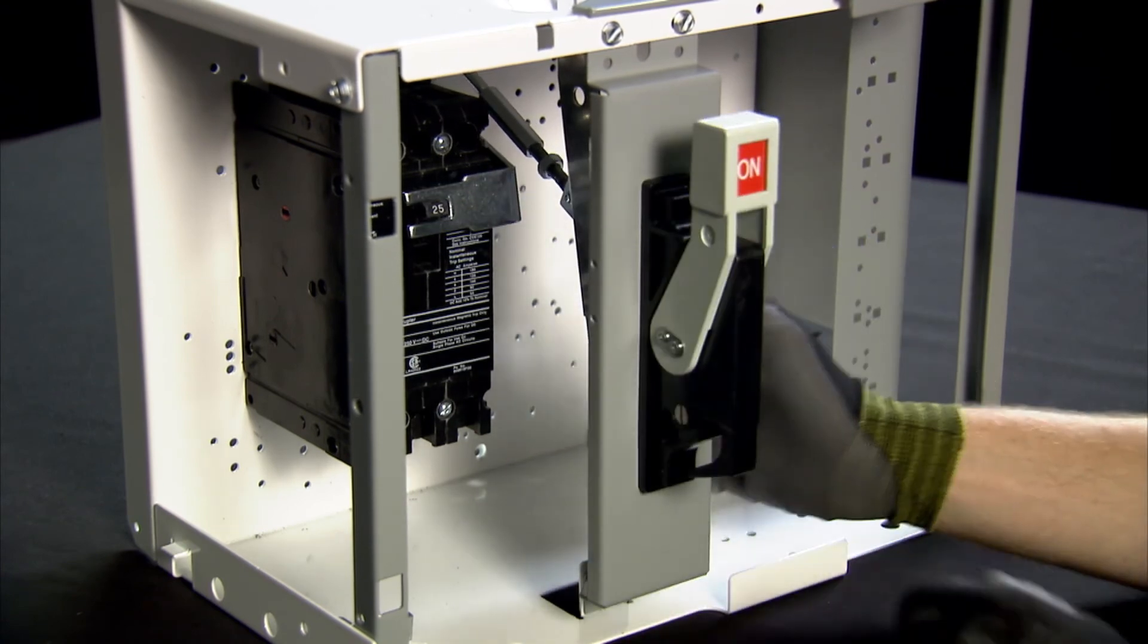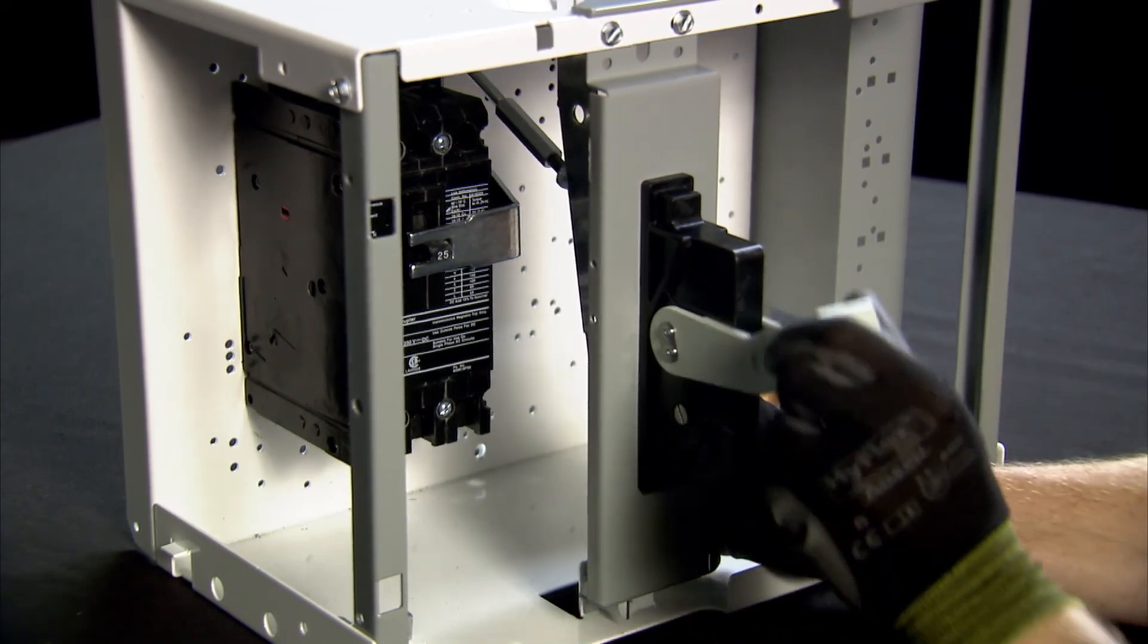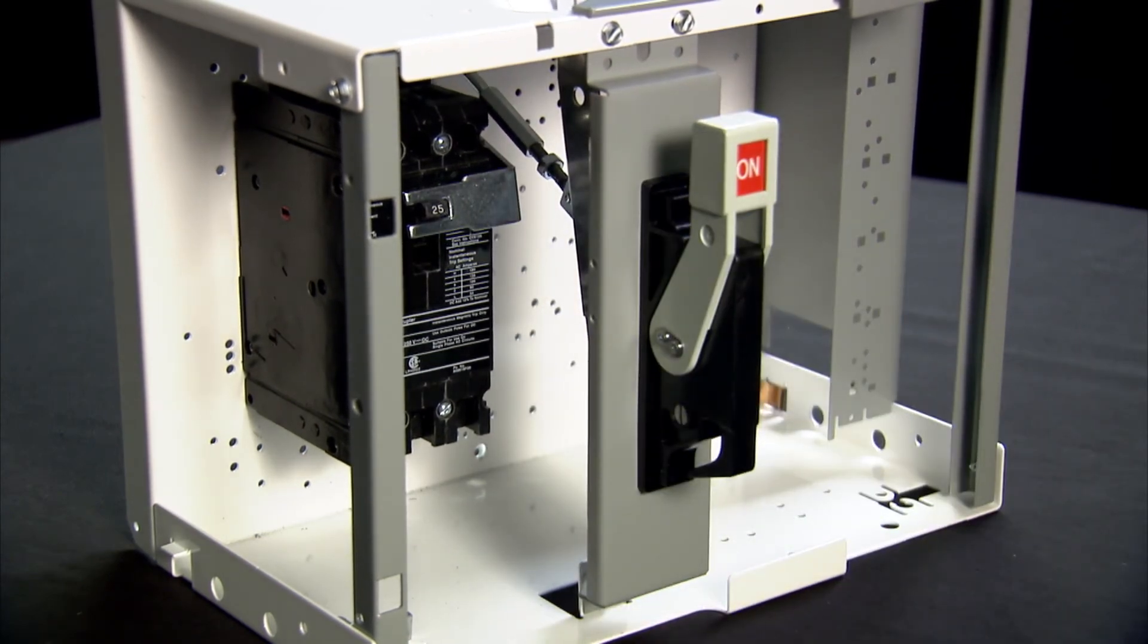Lengthen or shorten the rod until the handle is functioning properly. Once the rod is at the correct length, tighten down the lock nut against the turnbuckle.